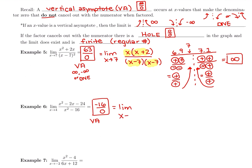I didn't even need my calculator — I just looked at the signs. Factoring the top, x squared minus 2x minus 24: I need factors that multiply to negative 24 and add to negative 2 — that's negative 6 and positive 4, giving (x + 4)(x − 6). The bottom is a difference of two squares: x squared minus 16 factors as (x + 4)(x − 4). The (x + 4) terms cancel.